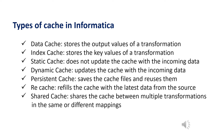Shared cache is a cache that can be shared across multiple lookup transformations. It can be shared within the same mapping or across different mappings. If you name the cache, you can use it in other mappings as well. If you don't rename the cache, you can share it between multiple transformations within the same mapping. It works like shared memory.